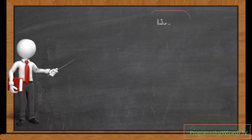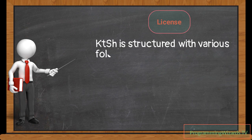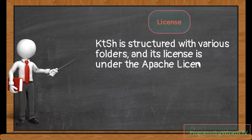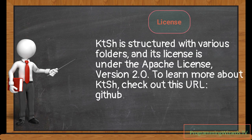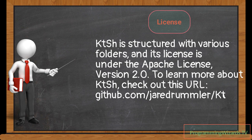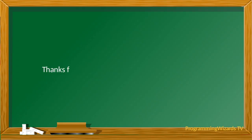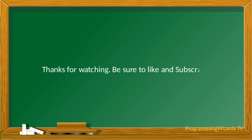What is the license for this project? KTSH is structured with various folders and its license is under the Apache License version 2.0. To learn more about KTSH, check out github.com/jaredrummler/ktsh. Thanks for watching — please be sure to like and subscribe. See you in the next video.